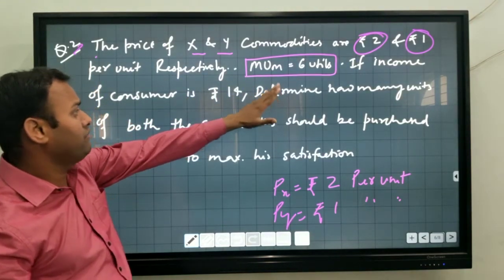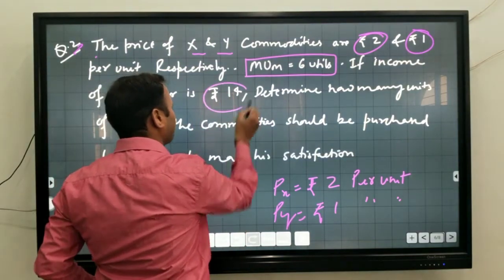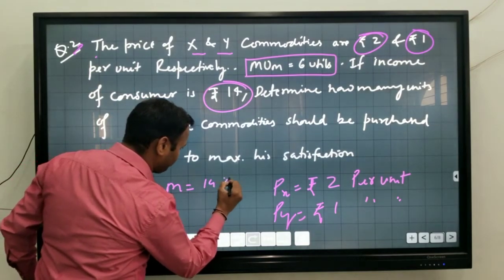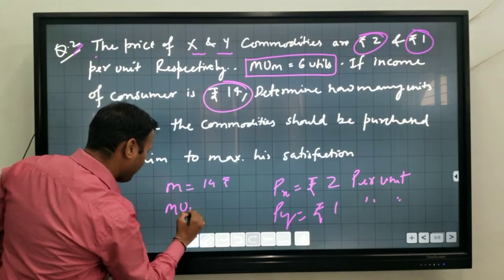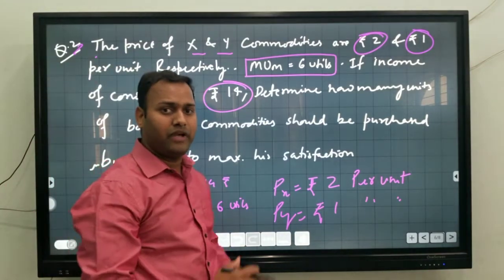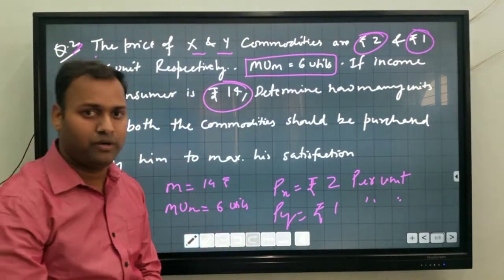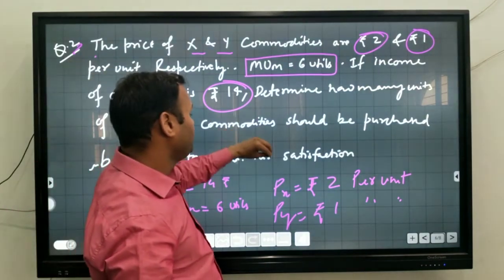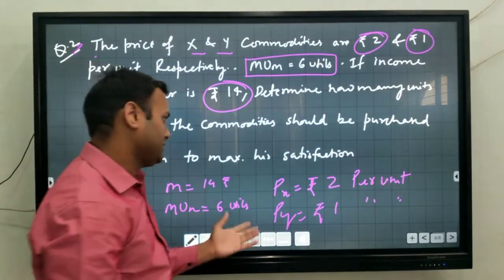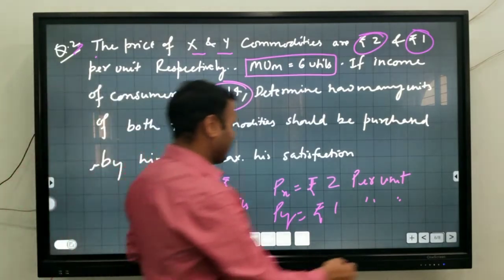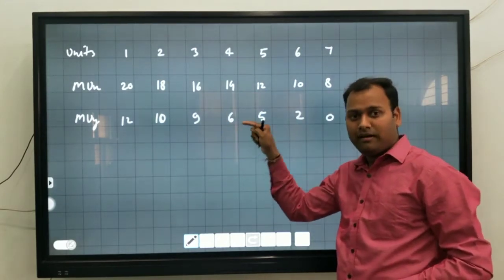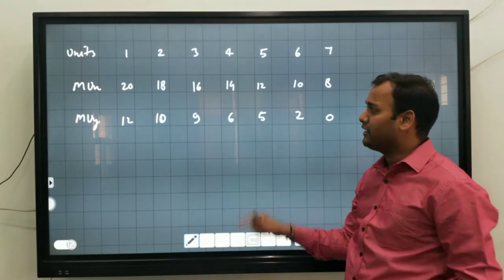The income of the consumer is 14 rupees, so M is equal to 14 rupees. MUM is equal to 6 utils. We have to identify how many units the consumer can consume of both goods to maximize satisfaction. Units 1 through 7 are given, along with MUX for commodity X and MUY for commodity Y.